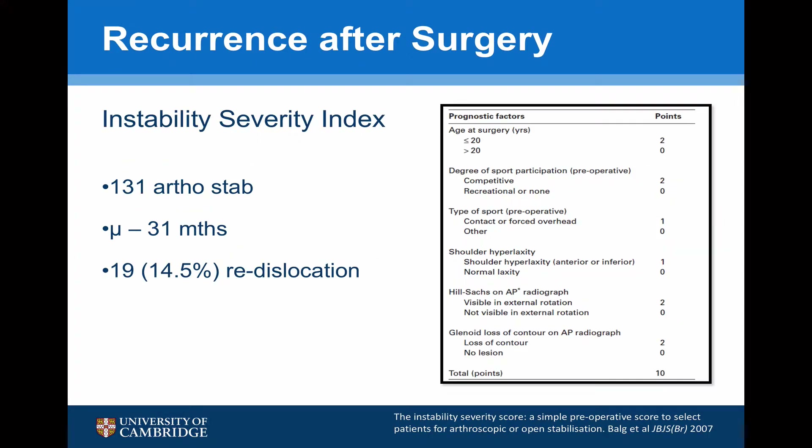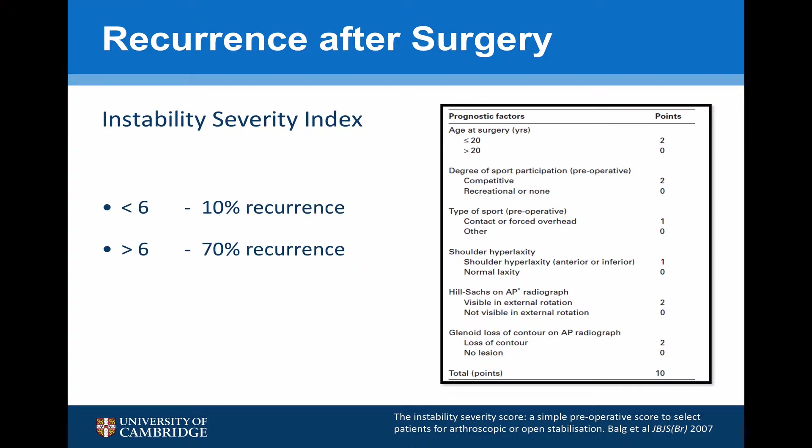The perceived advantage of the coracoid transfer over the simple bone block procedure is the dynamic sling effect. It has been noted that the failure rate of straightforward soft tissue Bankart repairs for contact athletes is higher than would be expected. These factors are taken into consideration in the Instability Severity Index, which looks at not only bone loss but also the age of athletes, their activity, and evidence of hyperlaxity. A score of six or more gives a very high likelihood that a simple soft tissue procedure will fail, and a coracoid transfer is then indicated.